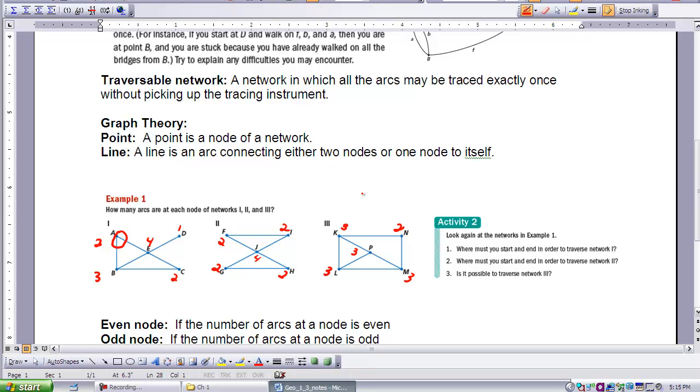The second thing I'd like you to do now is to see if you can traverse the network. Can you trace exactly once without picking up your tracing instrument and without overlapping or retracing your steps? Try that with examples one, two, and three.